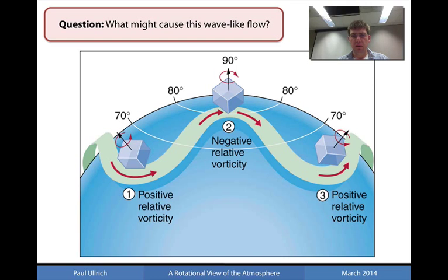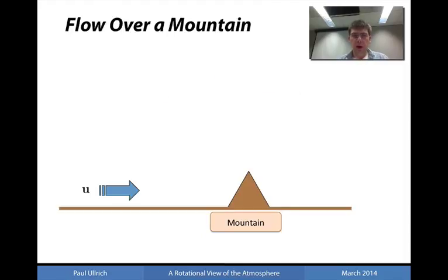The waves look very similar to what is shown in this figure, where we see basically a positive relative vorticity at the trough of the wave and a negative relative vorticity at the crest of the wave, and a continued persistence of the wave-like feature as it transitions around the earth. The main culprit for this turns out to be largely topographically driven forces, and we're going to see why that's the case in this lecture.